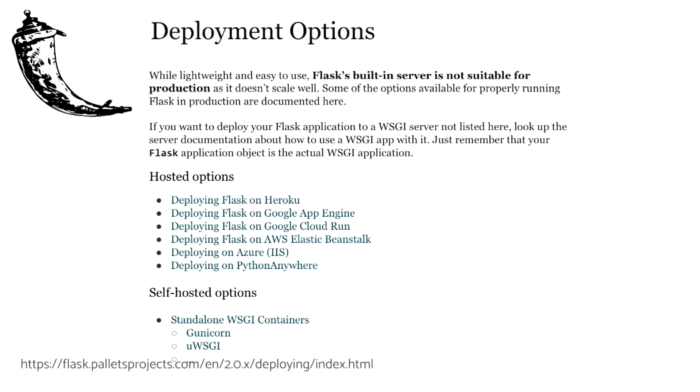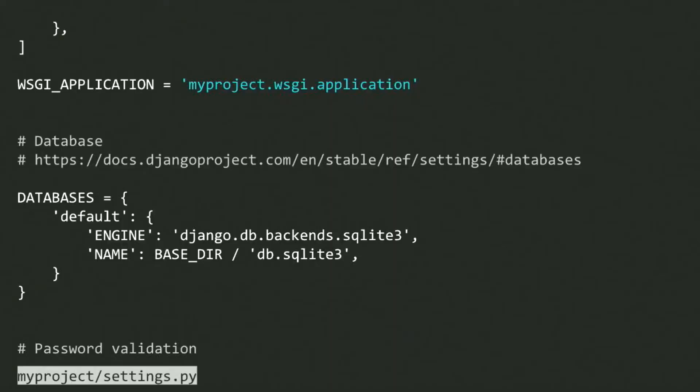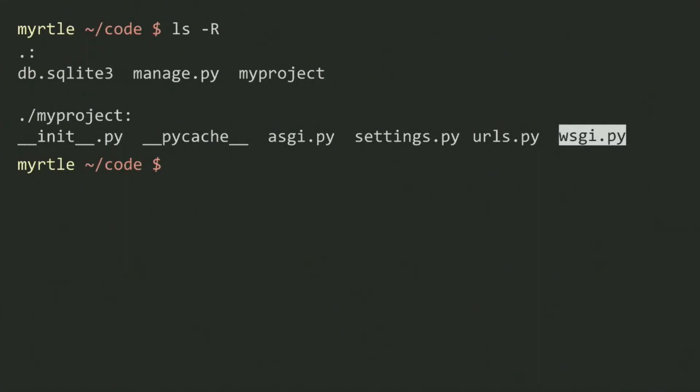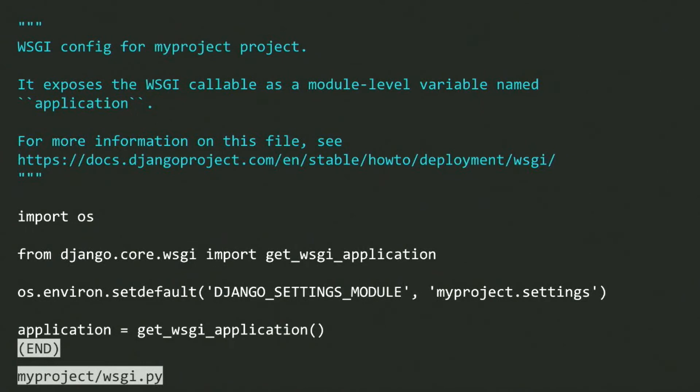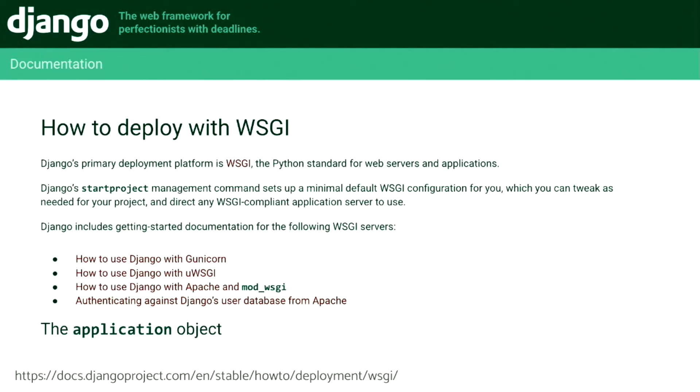The Flask documentation mentions this WSGI thing, which we also saw in the Django documentation — back in our settings file and in our file listing, there was a WSGI thing. The WSGI file, half its content is comments, and all it does is ensure there's an application module-level variable. And this documentation link is going to tell you what WSGI is.